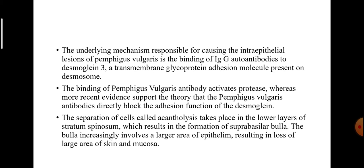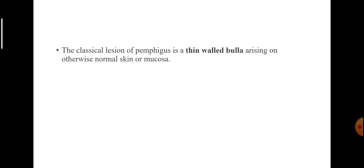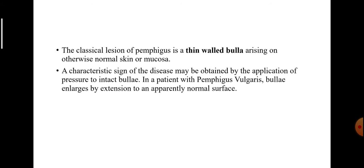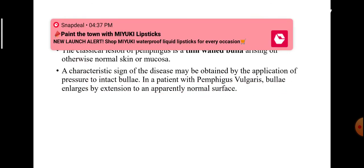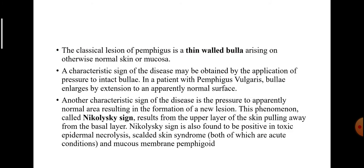The bulla increasingly involves a larger area of epithelium, resulting in loss of large areas of skin and mucosa. The classical lesion of Pemphigus is a thin-walled bulla arising on otherwise normal mucosa or skin. A characteristic sign of the disease may be obtained by the application of pressure to intact bullae. In a patient with Pemphigus vulgaris, bullae enlarge by extension to an apparently normal surface, and pressure to an apparently normal area can result in the formation of a new lesion.